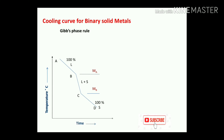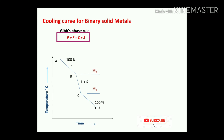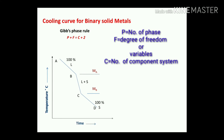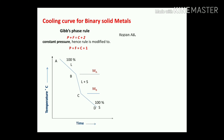Now let us apply the Gibbs phase rule: P plus F equals C plus 2, where P is the number of phases present, F is the degrees of freedom or variables acting on the binary system, and C is the number of components. For binary solid metals, it is a two-component system. Since every process occurs at constant pressure, the rule is modified to: P plus F equals C plus 1.